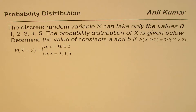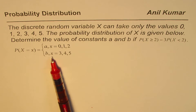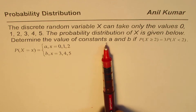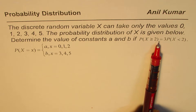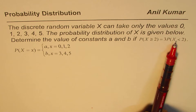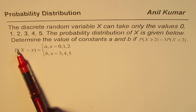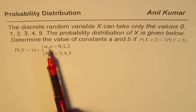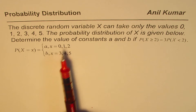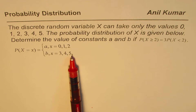Here is the question. It says the discrete random variable x can take only the values 0, 1, 2, 3, 4 and 5. The probability distribution of x is given below. Determine the value of constants A and B if the probability for x greater than or equal to 2 is equal to 3 times the probability of x less than 2. The probability of x for each value is A if x is 0, 1, or 2, and equals B if x is 3, 4, or 5.